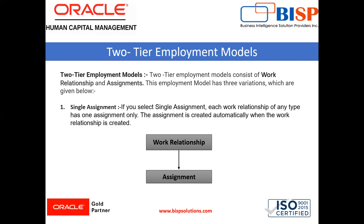As the name suggests, at any point of time a worker can have only one active assignment with a legal employer for any work relationship. When you create the work relationship for employee, contingent worker, or non-worker, the assignment record gets created automatically. The system will not allow you to create any additional assignment. By the diagram, you can understand — there is only one work relationship and one assignment.